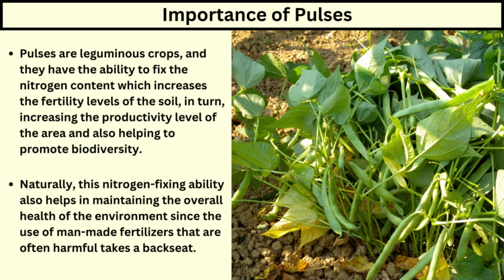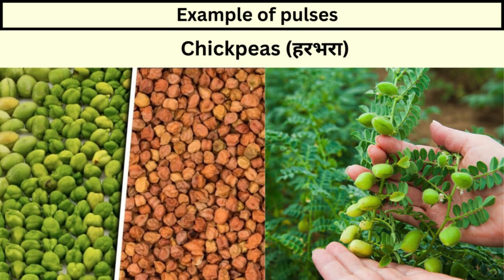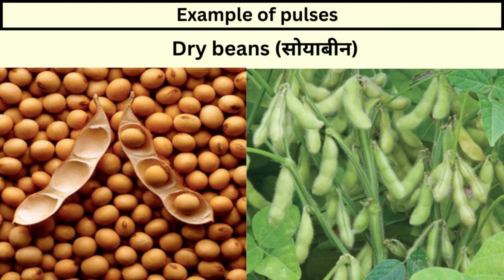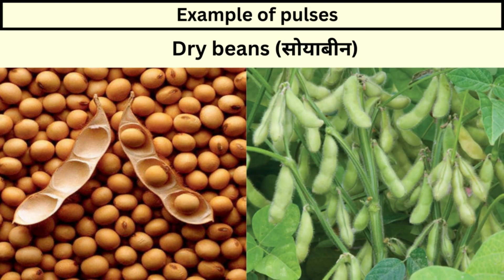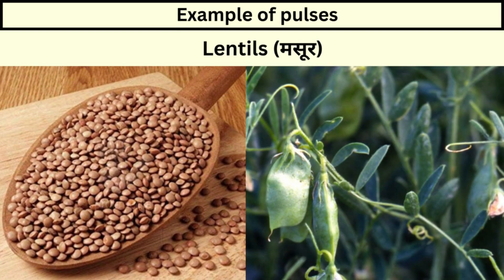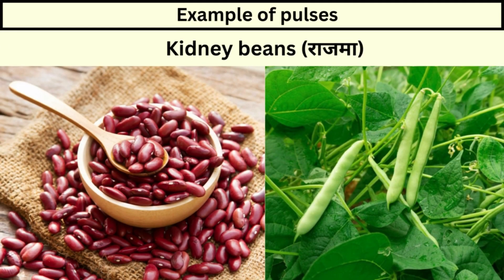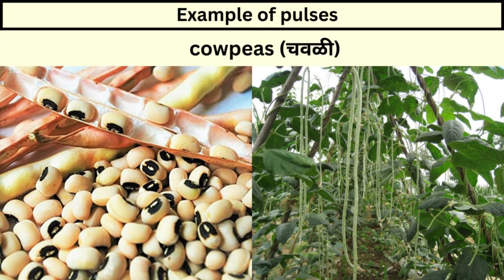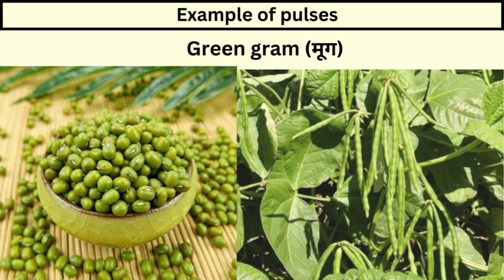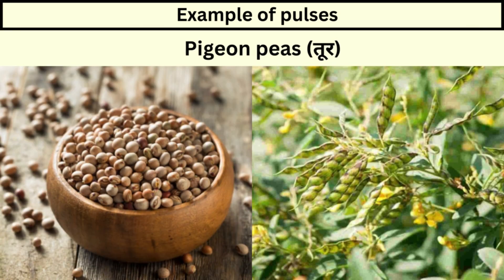This nitrogen-fixing ability also helps in maintaining the overall health of the environment, since the use of man-made fertilizers that are often harmful takes a backseat. Examples of pulses include chickpeas, dry beans, soya beans, lentils, kidney beans, cow peas, green gram, pigeon peas (Toor), etc.